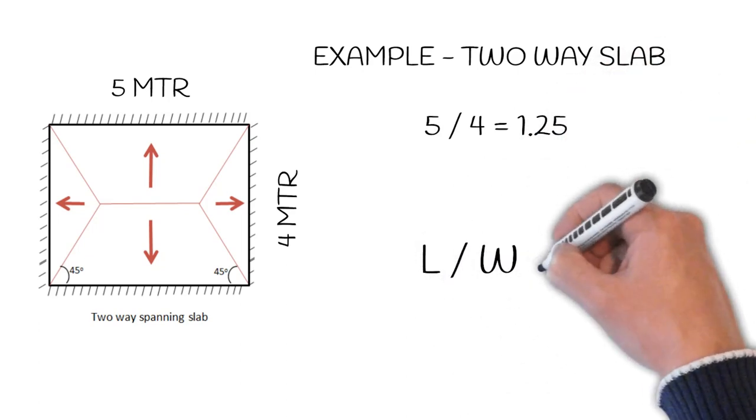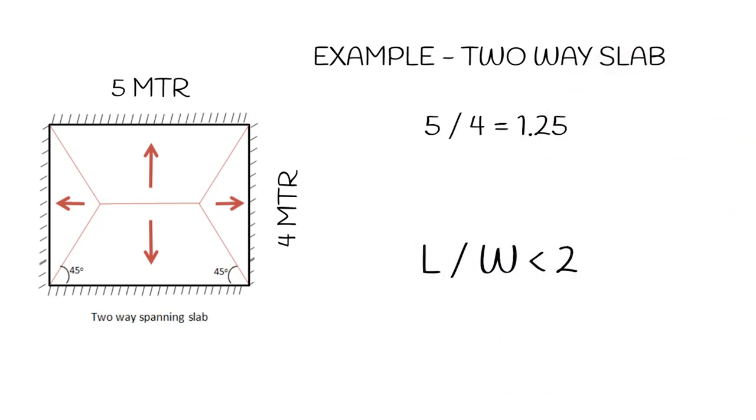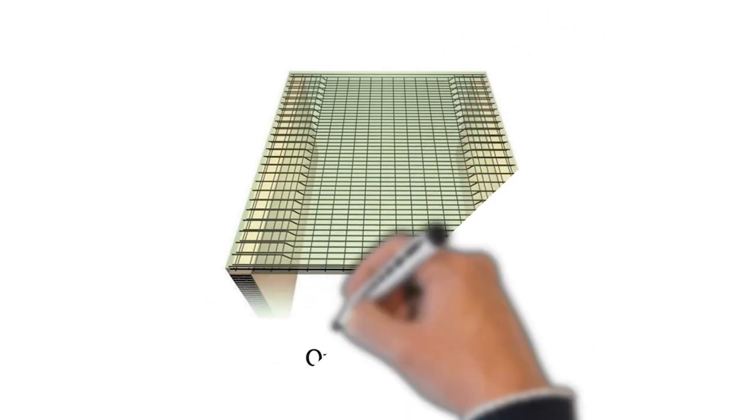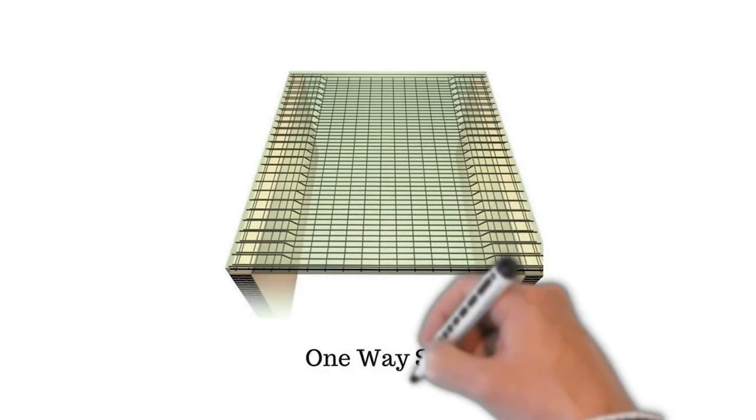In one-way slab, there is a huge difference in length, due to which the load is not transferred to the shorter beams. Main reinforcement is provided in the shorter span and distribution reinforcement in the longer span.